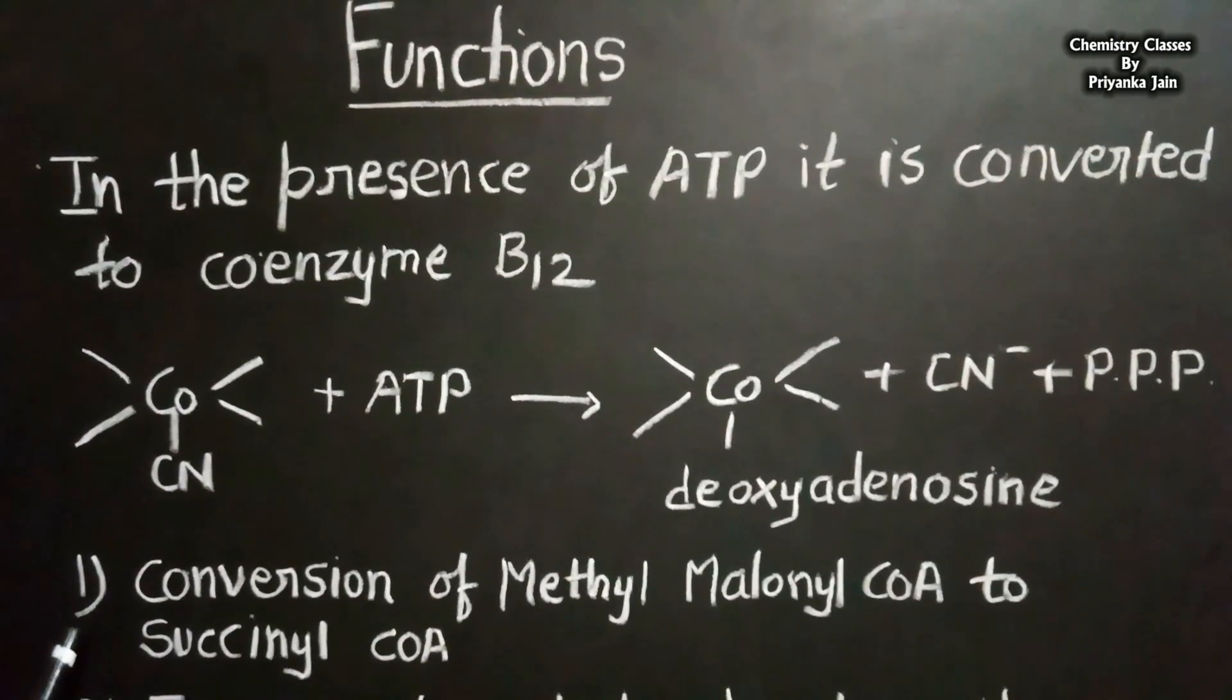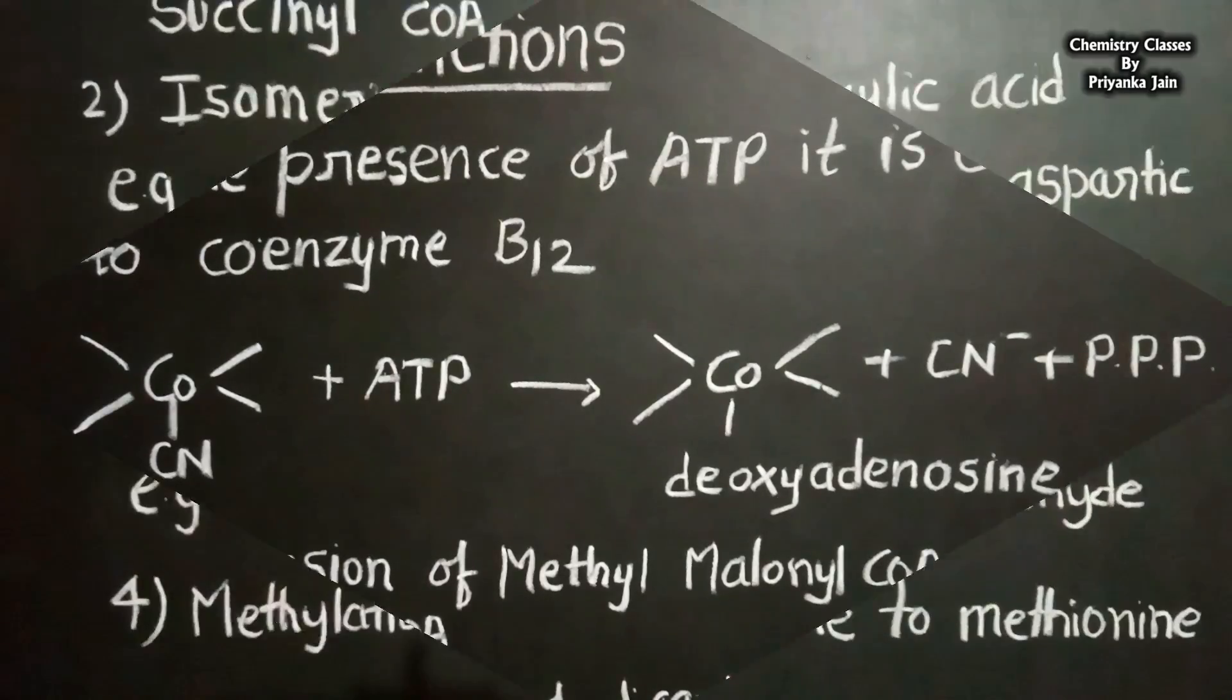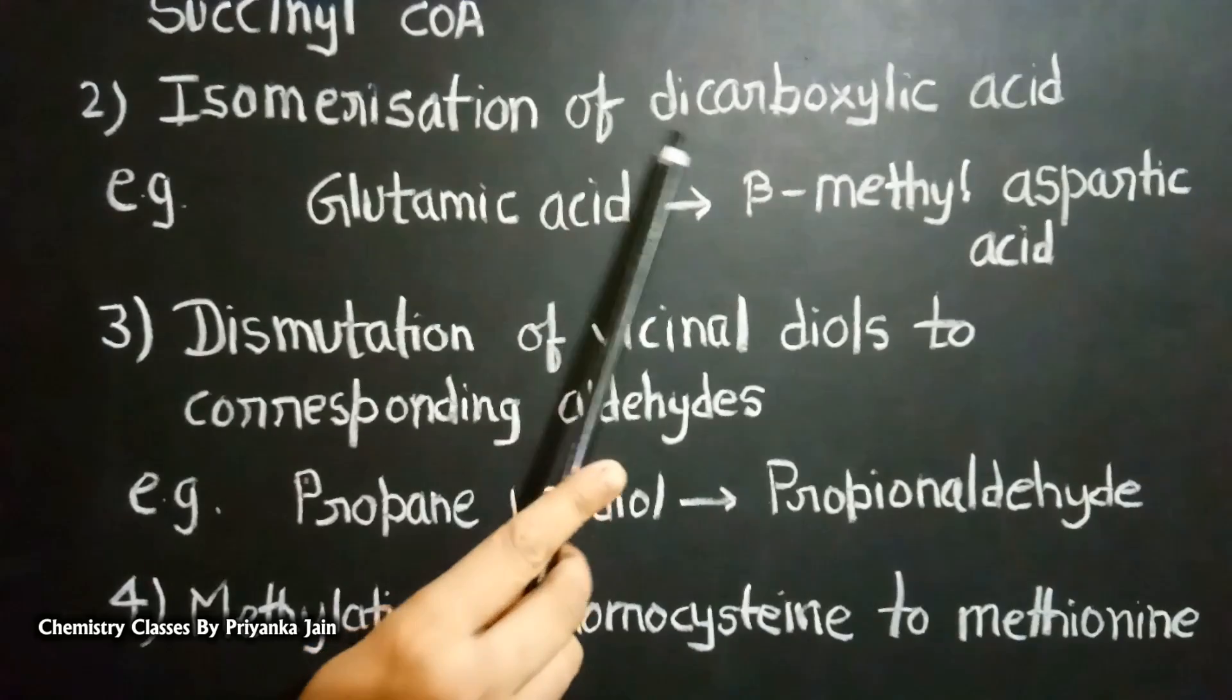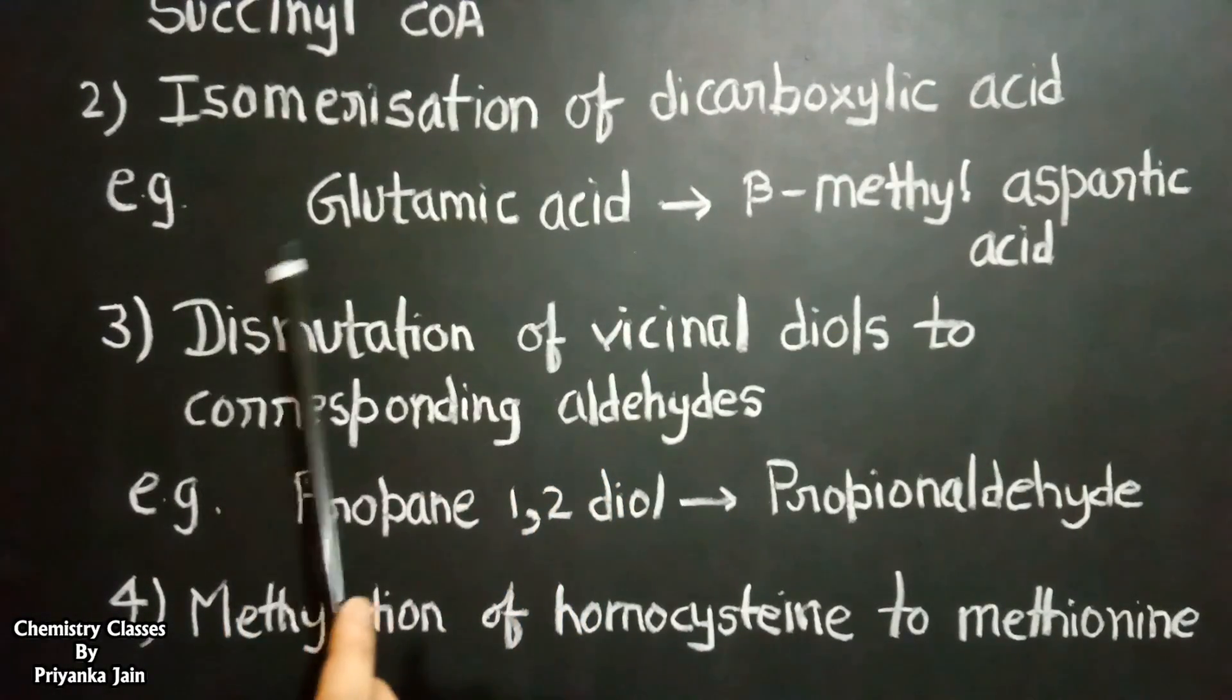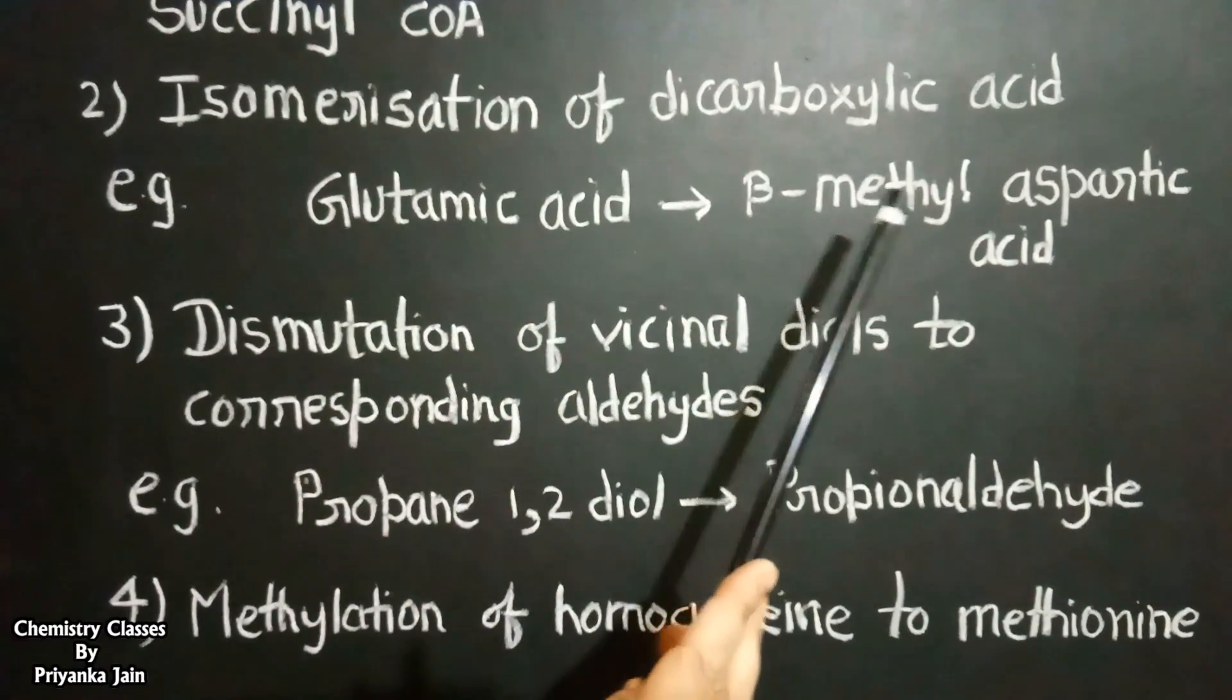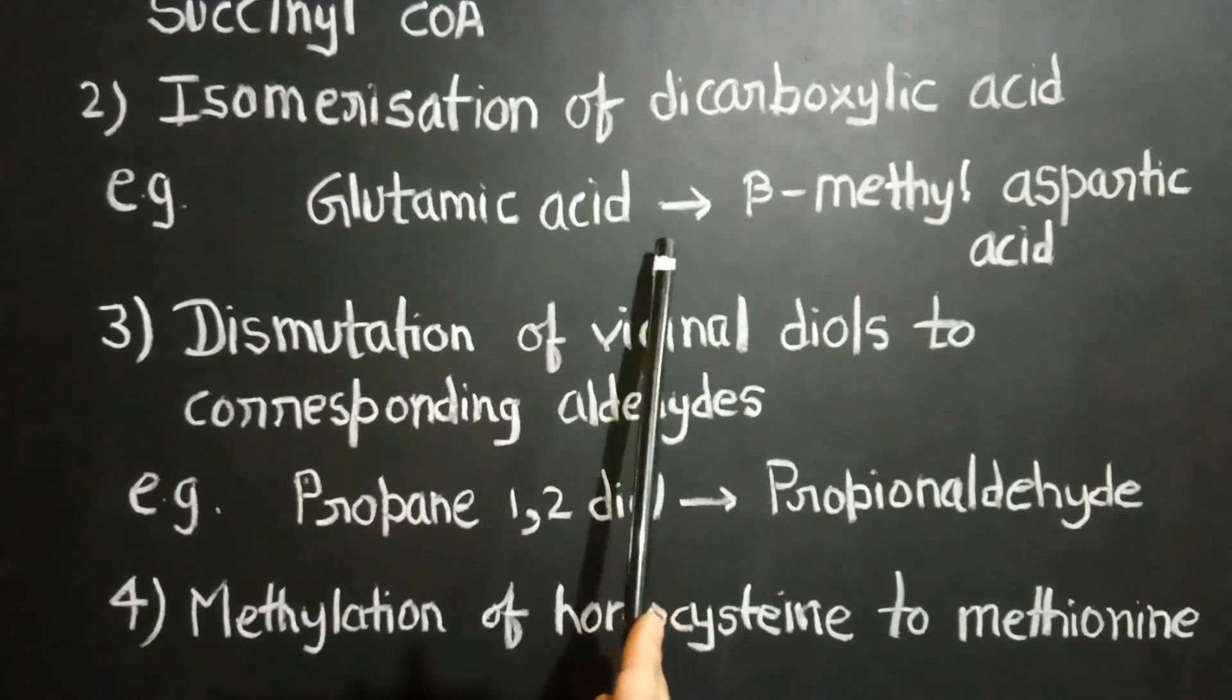One important process is the conversion of methylmalonyl coenzyme A to succinyl coenzyme A. The second important process is the isomerization of dicarboxylic acids. For example, the conversion of glutamic acid to beta-methyl aspartic acid takes place in the presence of coenzyme B12.